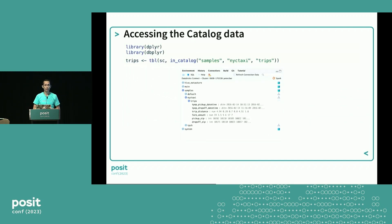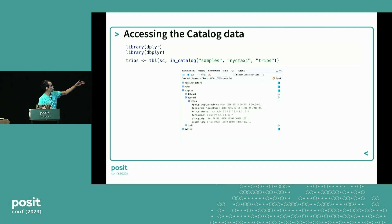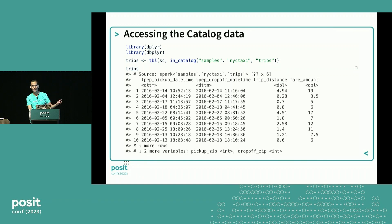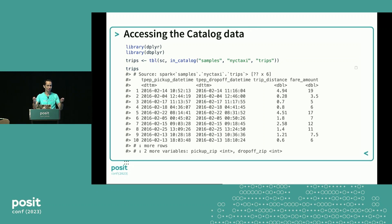Accessing catalog data is very easy now. DBplyr has a new function called in_catalog. You may be aware of in_schema — in_catalog gives you all three levels. For example, with 'samples', 'NYC taxi', and 'trips', you put those in the same order in the function call and you're good to go. This creates a pointer to the table. DBplyr and SparklyR have guard rails that prevent accidentally downloading billions of records — calling the variable just shows the top 10 rows.